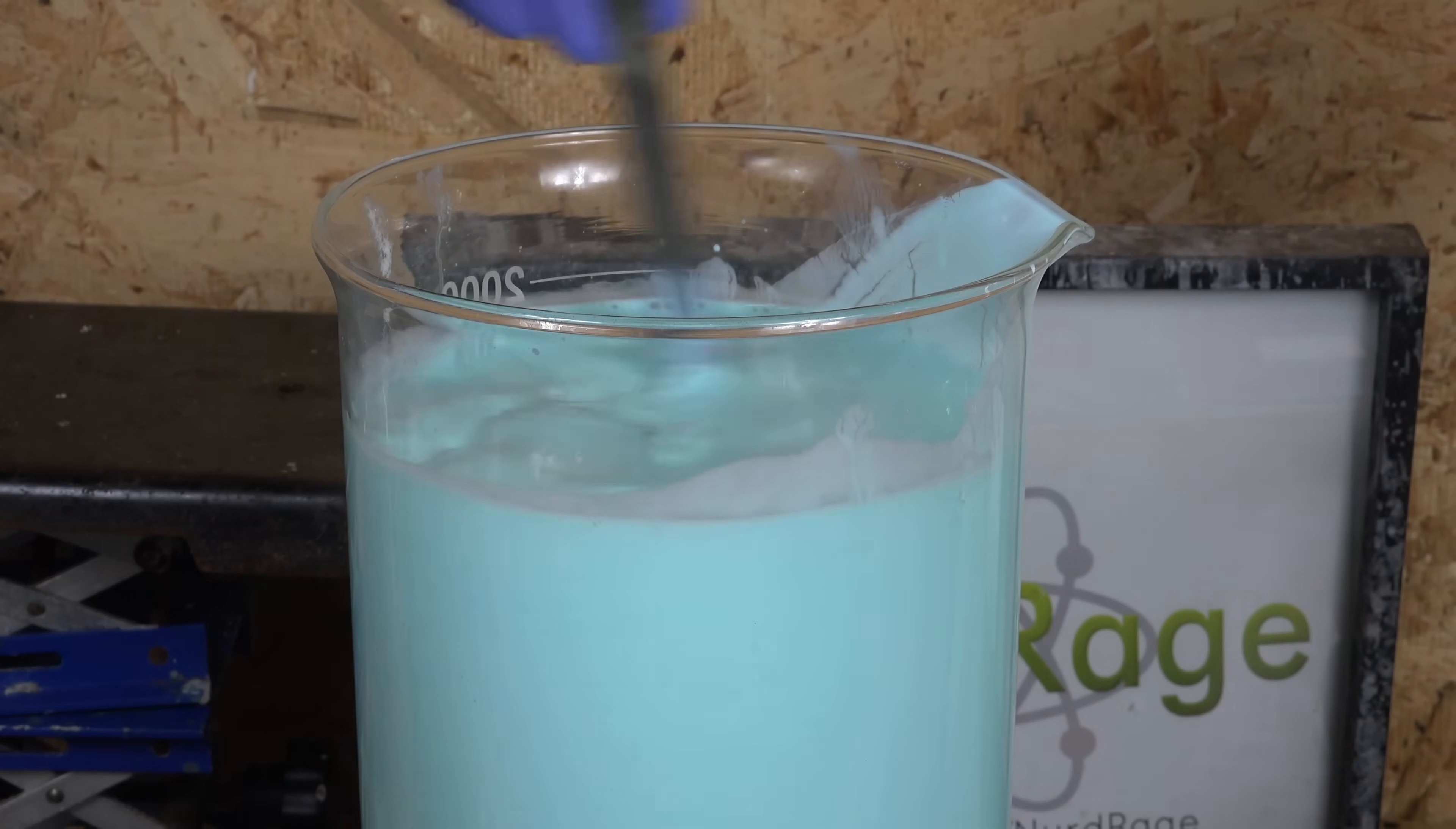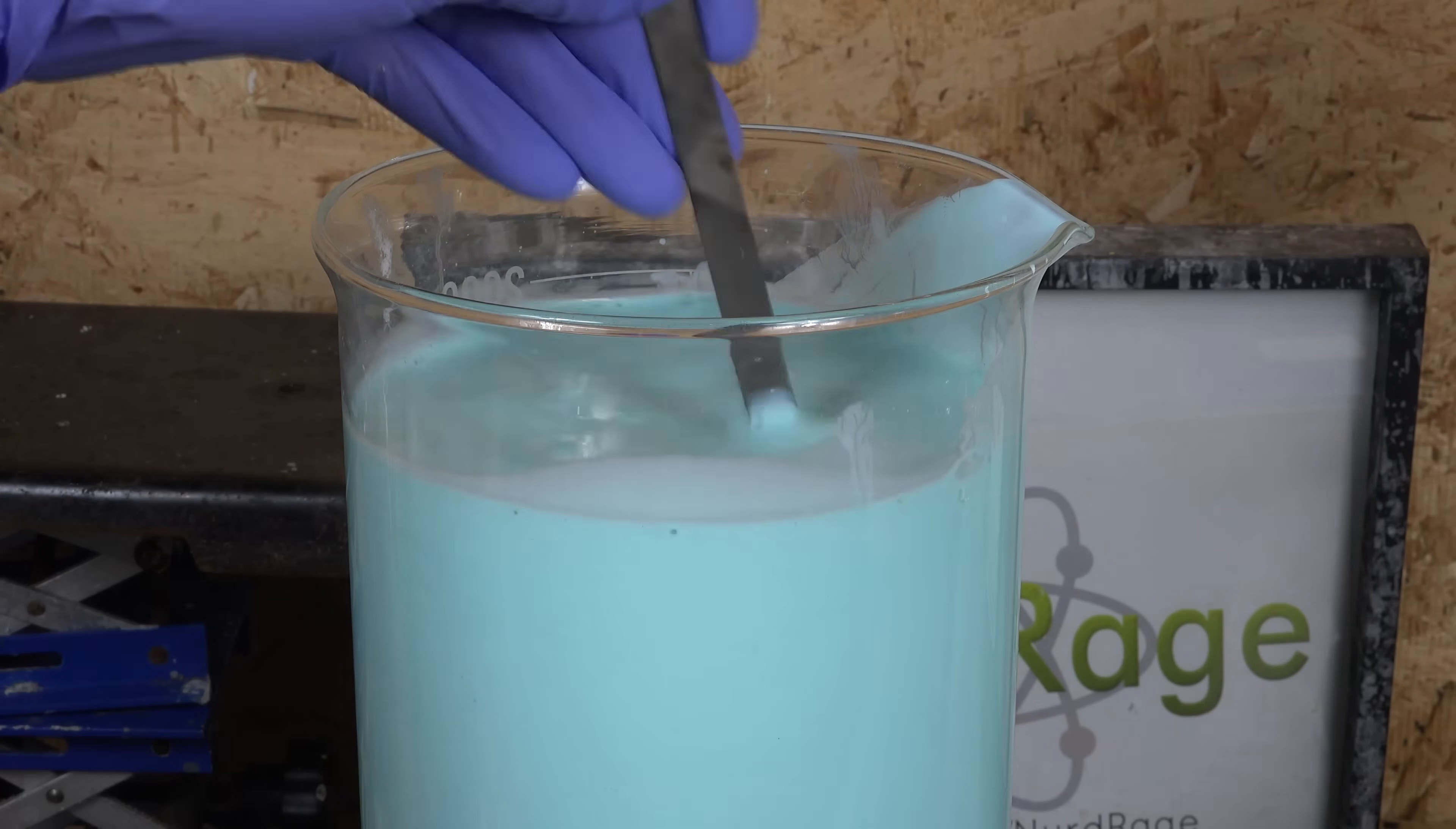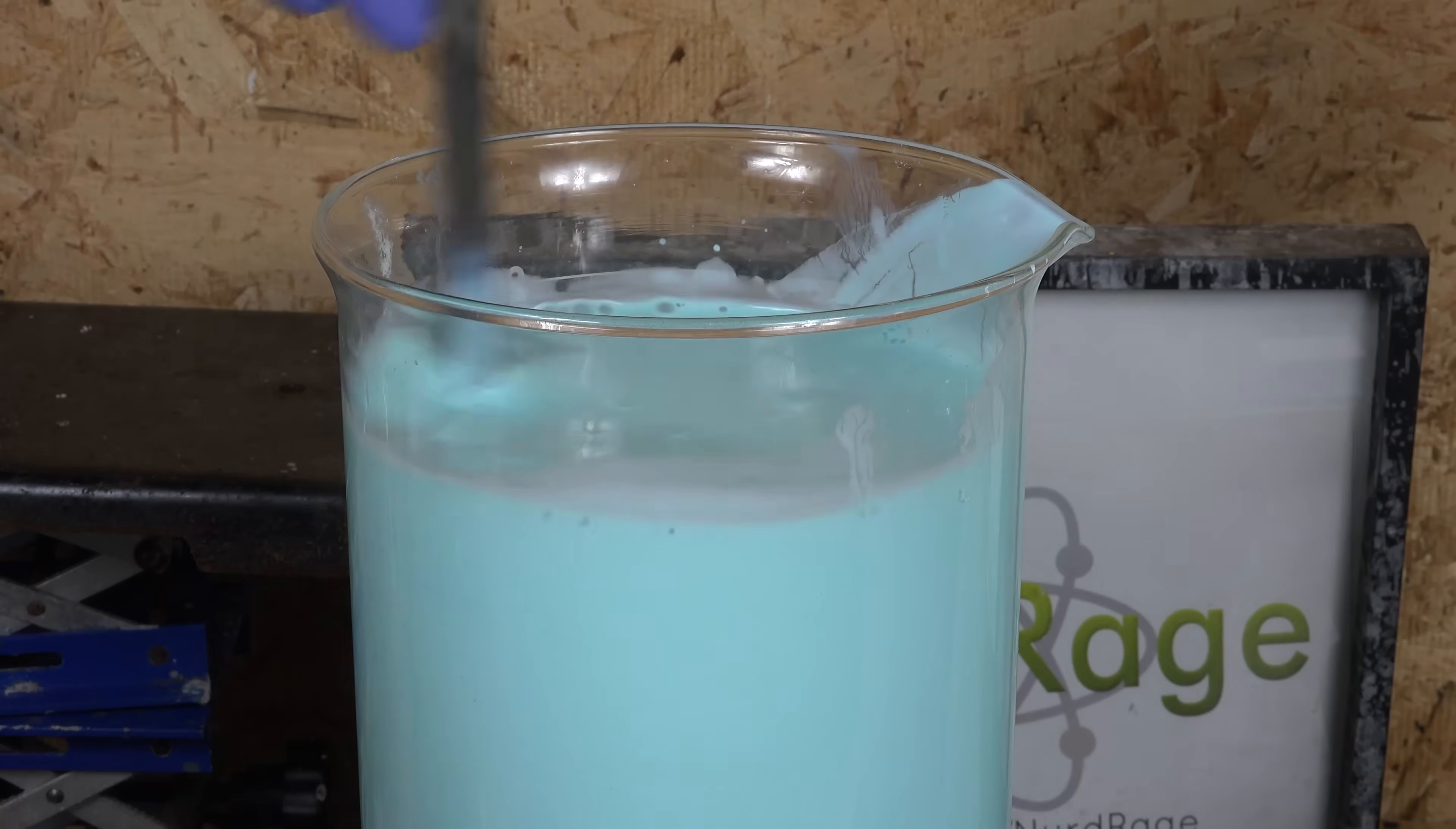This is disappointing because the process does seem to work. The minor amount of solution that did separate was almost clear, indicating the copper ions were indeed mostly removed. Without a way to separate the copper oxalate from the supernatant, it doesn't seem viable.